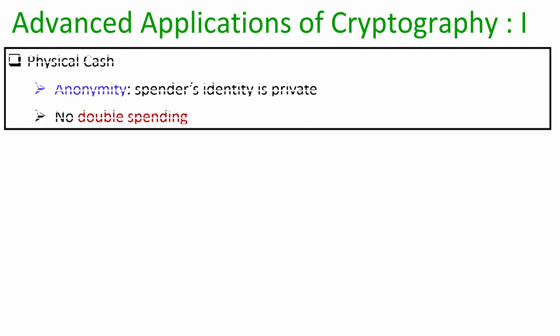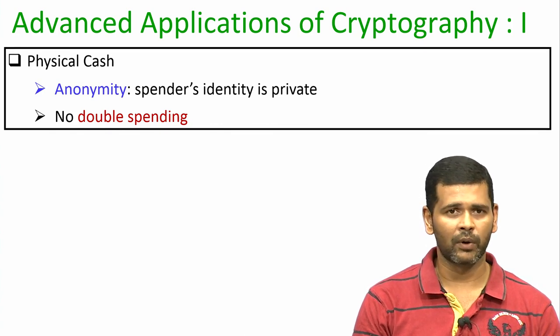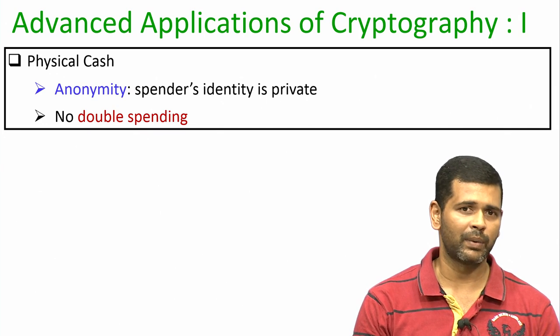What I would like to go through in the next few slides is some of the advanced applications of cryptography — the idea is to give you a feeling of how cryptography can be used to solve various real-world problems apart from secure communication. The first advanced application is that of cryptocurrency. Before going into cryptocurrency, let us understand the two important properties satisfied by your physical cash or fiat currency. The two properties are: it prevents double spending — meaning it is impossible for you to create xerox copies of a physical note and spend it at multiple locations — and the second property is anonymity, meaning if I am using physical currency no one will be able to track down my identity.